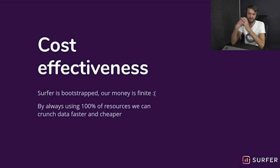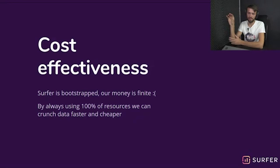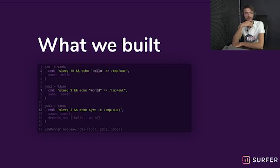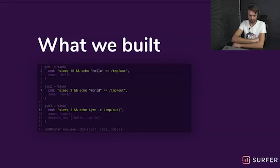None of the existing tools allowed us to say: this job should run on a very small instance CPU and memory wise but with a huge disk, and that job should run with huge memory. So as a proof of concept we built a very simple runner with a very simple API. You can define jobs in Elixir, and each job has its own command that you want to run on the machine.